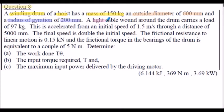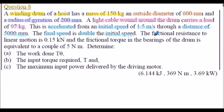A light cable is wound around the drum and carries a load of 97 kilograms. This load is accelerated from an initial speed of 1.5 meters per second through a distance of 5000 millimeters, and the final speed is double the initial speed. There is a frictional resistance to the linear motion of 0.15 kilonewtons and a frictional torque in the bearings of the drum equivalent to a couple of 5 newton meters.